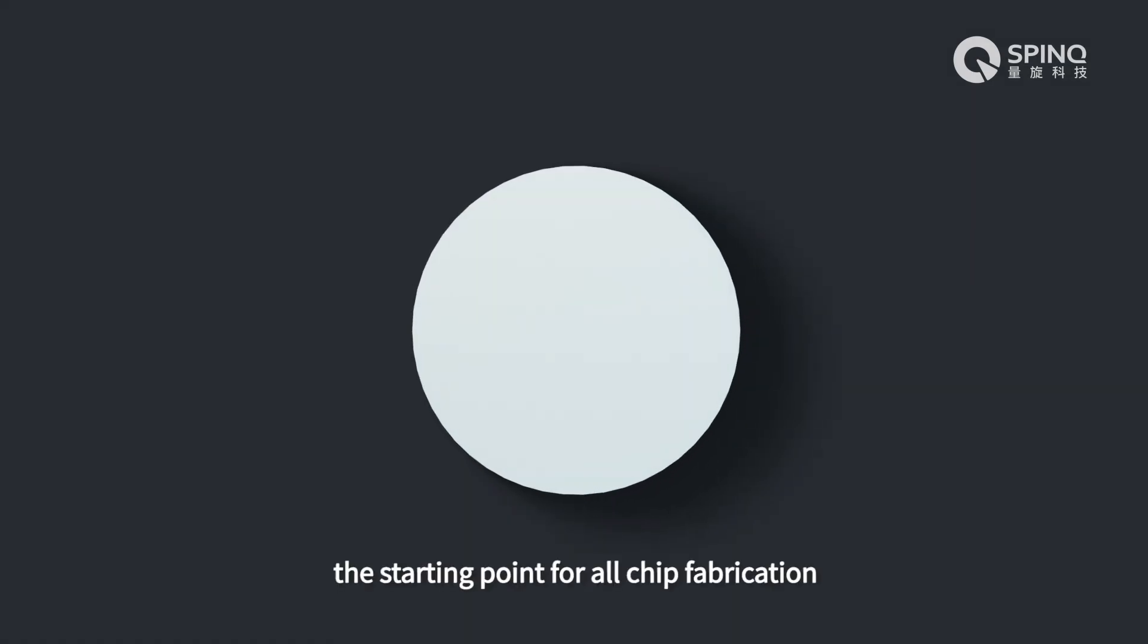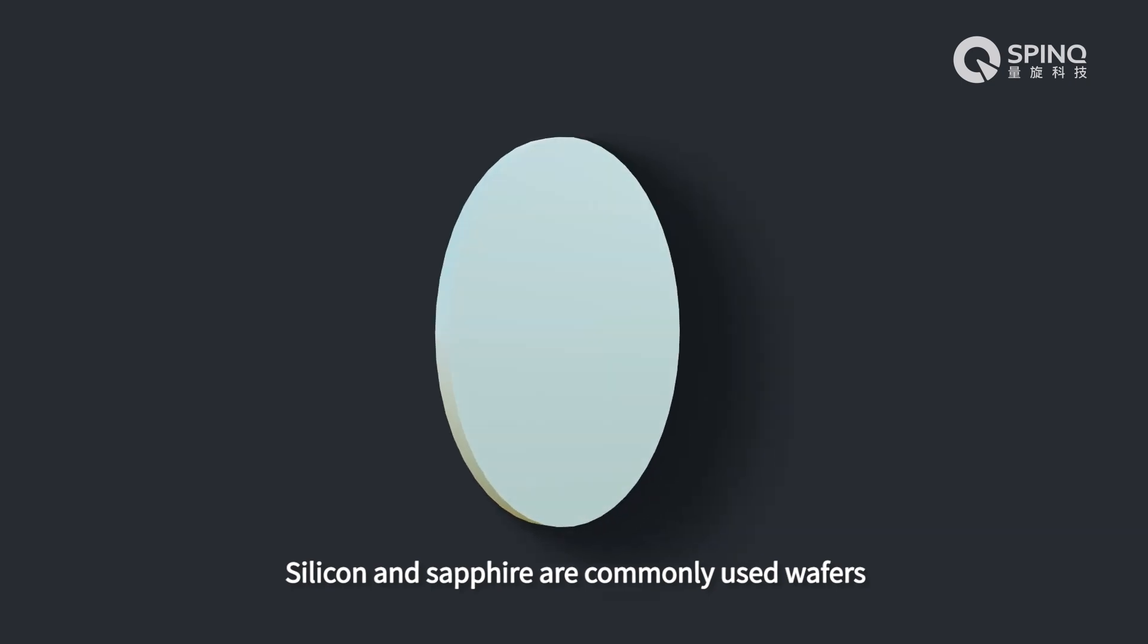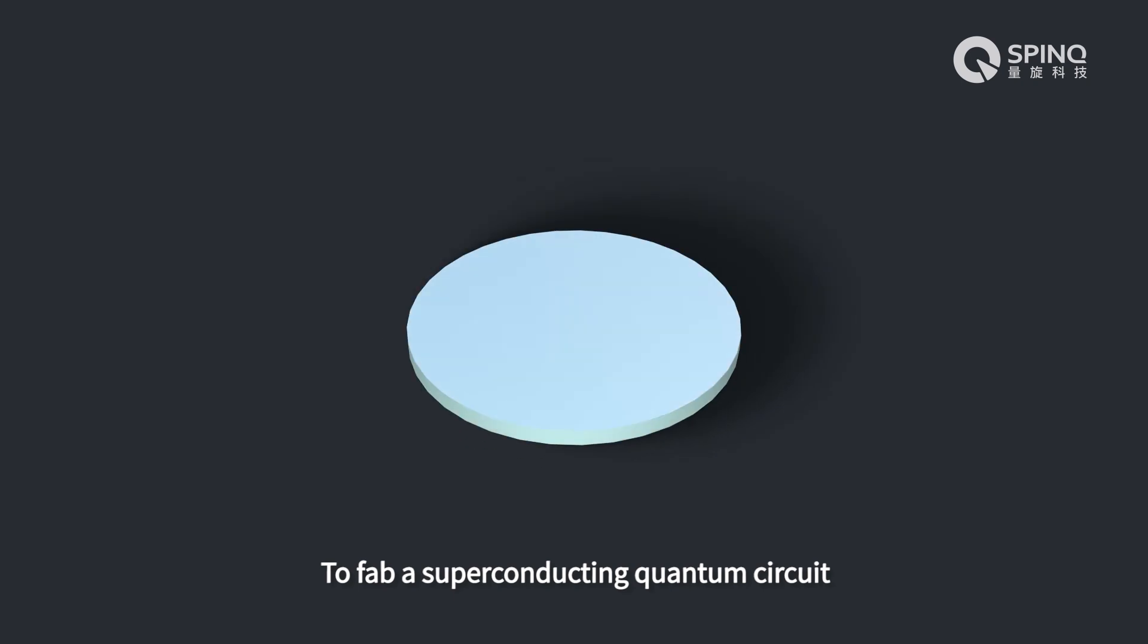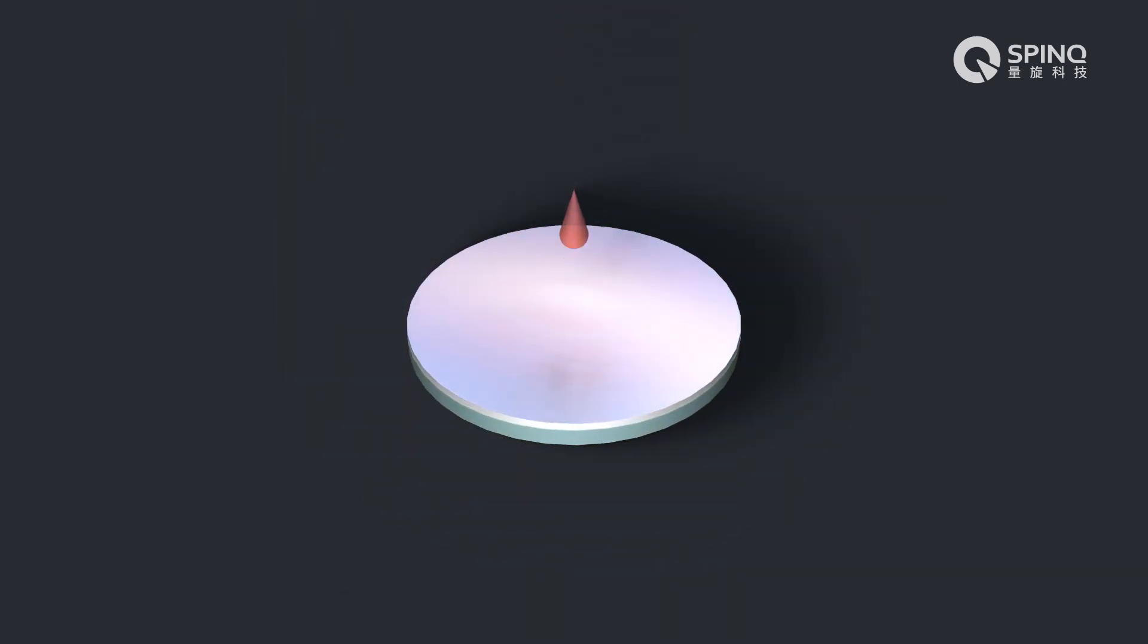This is a wafer, the starting point for all chip fabrication. Silicon and sapphire are commonly used wafers in quantum chips. To fabricate a superconducting quantum circuit, a layer of superconducting metal film is grown onto the wafer surface. A layer of photoresist is then applied on the film.